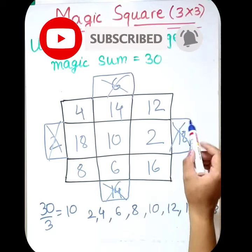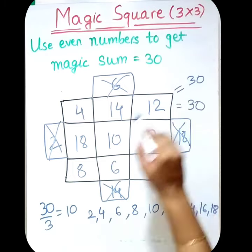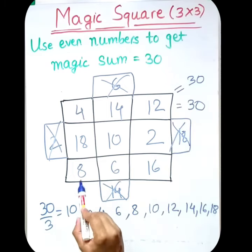See, 4 plus 14 is 18, 18 plus 12 is 30. 8 plus 10 is 18, 18 plus 2 is... 4 plus 18 is 22, 22 plus 8 is 30. So we got a magic square of even numbers with magic sum 30.